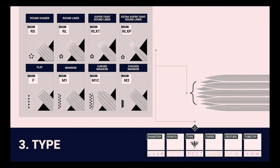Needle type, or needle configuration, indicates the arrangement of the needles in a grouping. The most common needle configurations are round shaders, round liners, flats, magnums, and stacked magnums. To identify the type of needle configuration, look under type in the third box on the needle ID label.